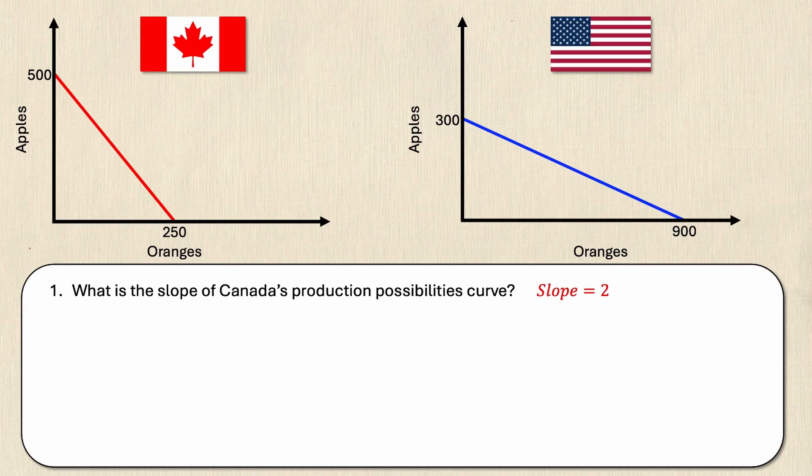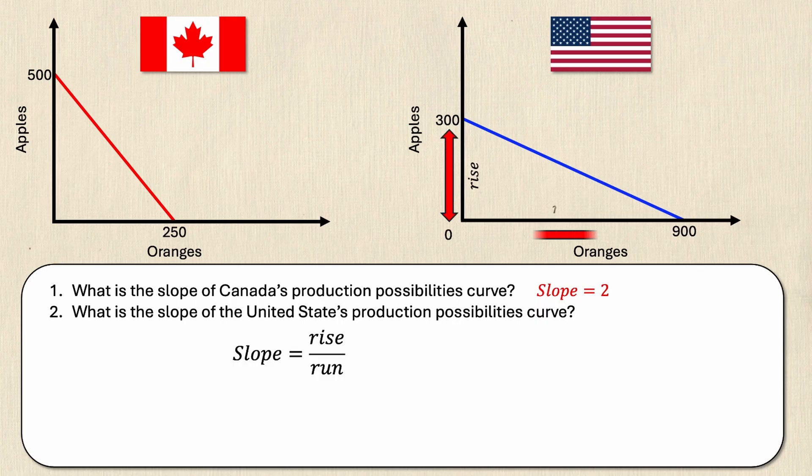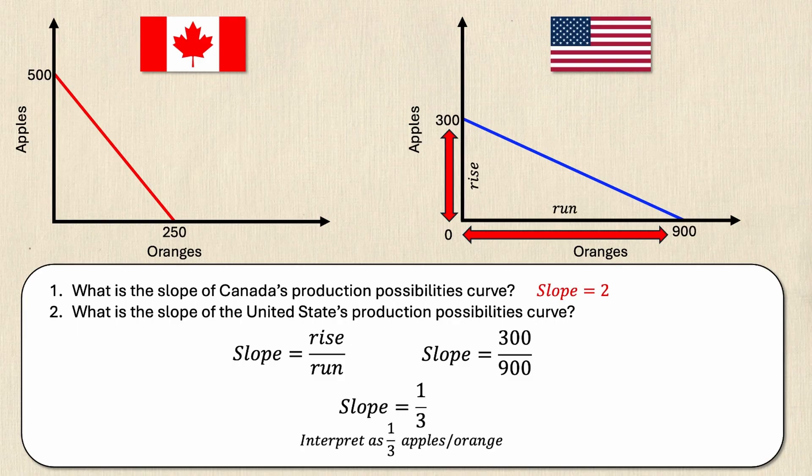Now this looks at the United States and asks for the slope of their production possibilities curve. We're going to use the exact same formula except it's going to have different values. So we have rise over run where the rise is 300 and the run is 900. Substituting those into my equation I get slope equals 300 over 900 which reduces to slope being one third. Once again this can be interpreted that the United States can produce one third of an apple per orange.